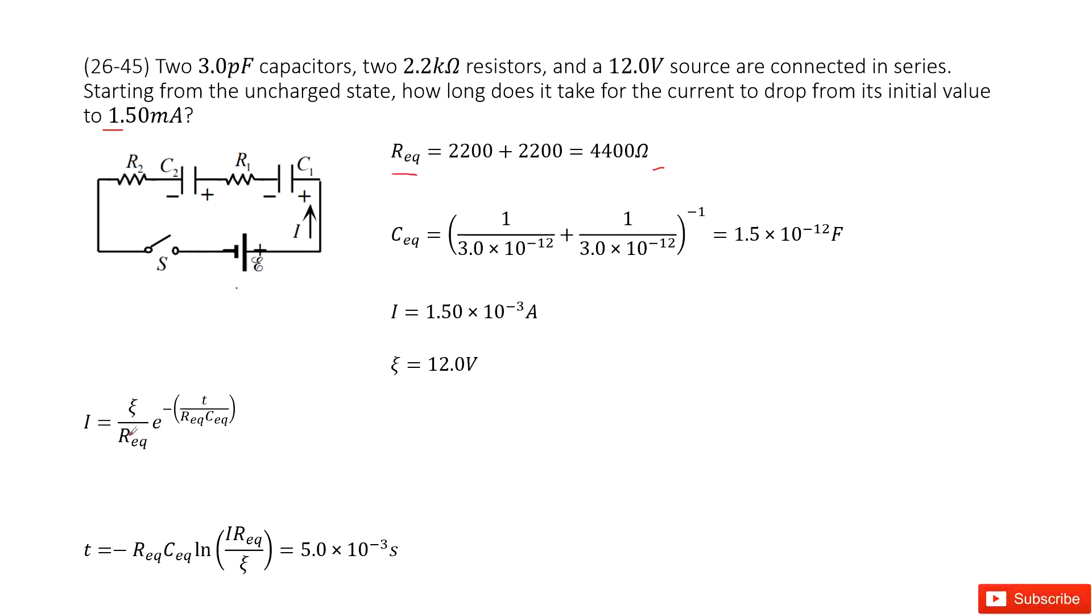And then you can use epsilon divided by R equivalent. This is called I initial. So it looks like we need to find the resistance equivalent and capacitor equivalent. Then we can solve it.